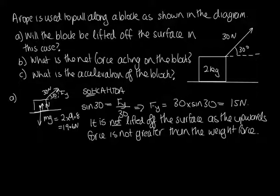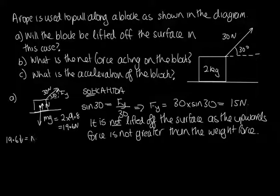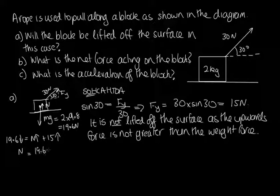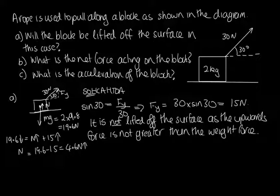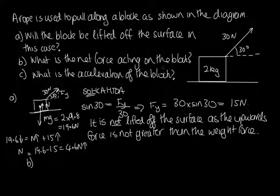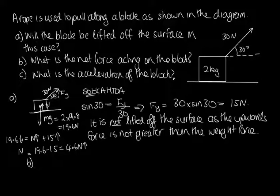We can also calculate the normal force: 19.6 Newtons downwards must equal the normal force plus the 15 Newtons upwards, so the normal force is 19.6 minus 15 = 4.6 Newtons upwards. For Part B, vertically there is no net force since the downward weight force is balanced by the normal reaction force plus the upward component of the applied force.